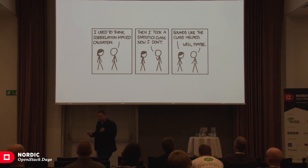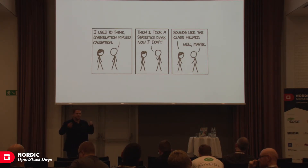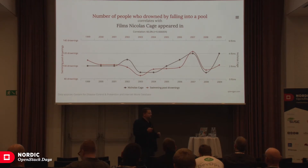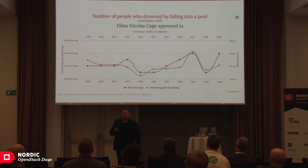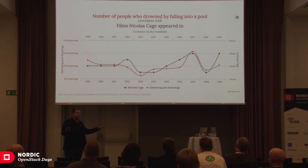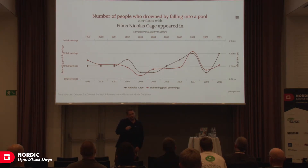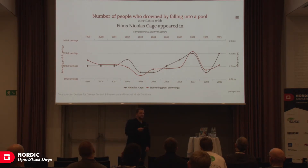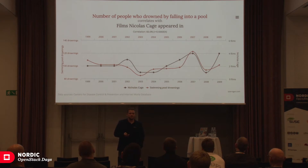I usually give a senseless example of what correlation could look like. The number of people who drowned in pools actually correlates to the number of movies where Nicolas Cage appears in. It correlates — it's just there. One could argue whether there is causation behind it — are people drowning because Nicolas Cage makes so many movies? The point is: just because two things happen at the same time and you notice them at the same time does not mean they have anything to do with each other.